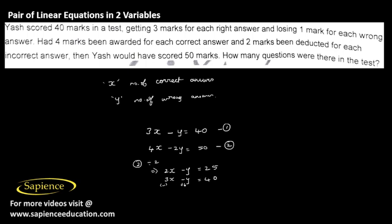Now if we subtract these two equations, we will be getting -x = -15, or the value of x is 15. We got 15 questions correct.